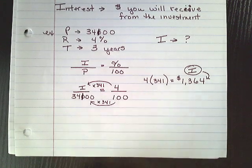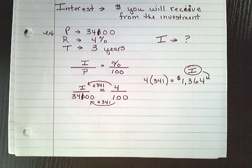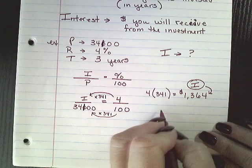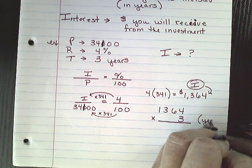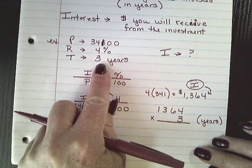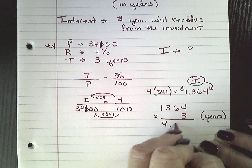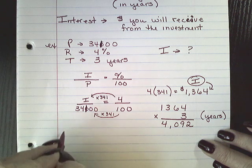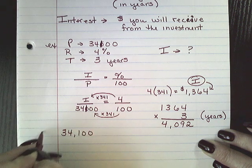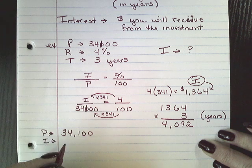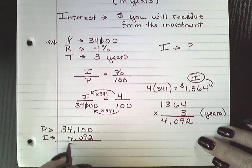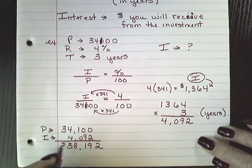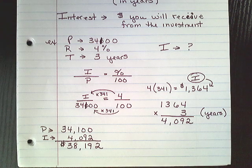Here is where you have to take into consideration the years. Every year you're going to make the same amount of money on your investment — that's what simple interest is. So now I have to take that $1,364 and multiply it by 3, because you invested it for 3 years. That's going to be $4,092. So your original principal was $34,100, and your interest is $4,092, making the total $38,192. If you pulled that money out, you would make that kind of cash.